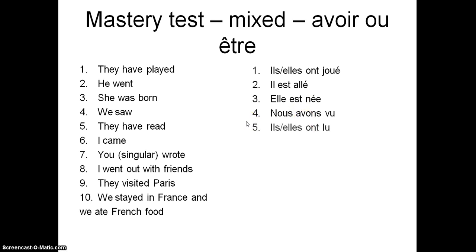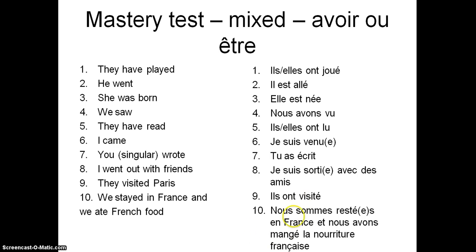They have read. Ils ou elles ont lu. Again, an avoir verb. I came. Je suis venu. Extra e on the end if it's a girl talking. Otherwise don't need it. But it's an être verb. You singular wrote. Tu as écrit. Avoir verb here. I went out with friends. Je suis sortie. Again if you're a girl, you'd have an e on the end. Avec des amis. This one, visité, an avoir verb. Ils ont visité. Could be elles ont visité as well. And this last one, a mixed. Nous sommes restés en France. Resté. E on the end.